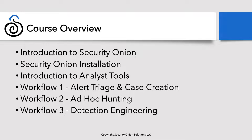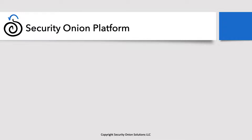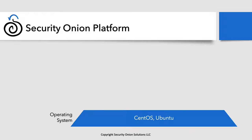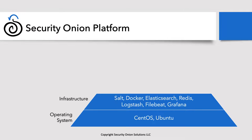We certainly have a lot to cover, but let's start with a quick introduction to the platform. When we talk about Security Onion, there are many different aspects, but they all start at the very bottom with the operating system. We currently support both CentOS and Ubuntu as a base operating system. Almost everything within Security Onion uses Docker containers, which allows us to support installations on either. That's where Salt Stack comes into play — Salt allows us to orchestrate and manage all these different Docker containers and their configurations.